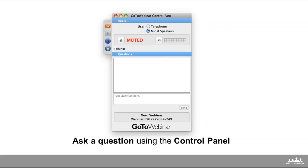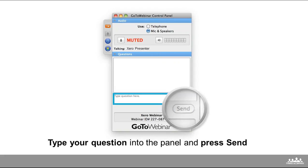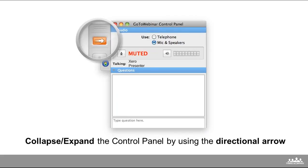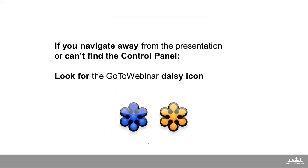On your screen you'll have a GoToWebinar control panel. If at any point you want to ask a question, you can just type your question in that box and press send, and we'll try and answer any questions towards the end of the webinar. You can also collapse and expand the control panel by using the directional arrow, so if it is blocking your view just collapse that. If you navigate away from the presentation or can't find the control panel, just look for the GoToWebinar DAISY icon and that should get you back to where you need to be.